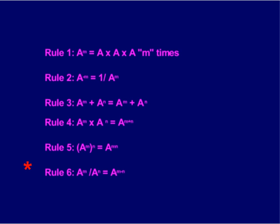And rule number six, if we divide by exponents, you're subtracting. So a to the m divided by a to the n equals a to the m minus n.